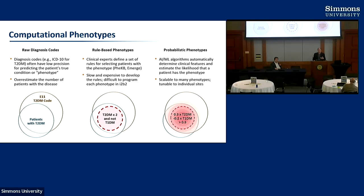This becomes a big problem in clinical trials. If you think you have a certain number of patients in your hospital that have the condition, and then you try to recruit them, you're not able to actually find those true patients because you're overestimating their counts from the EHR data.